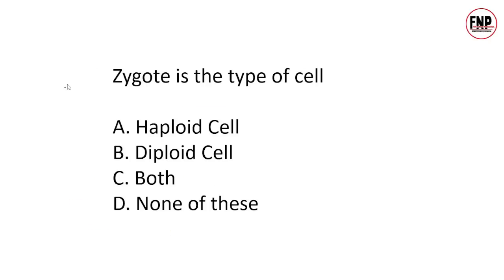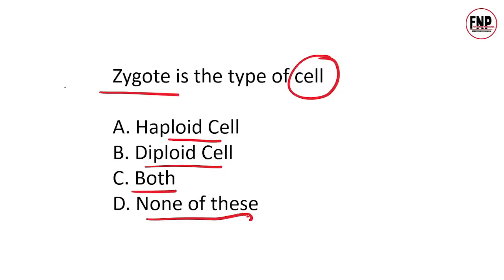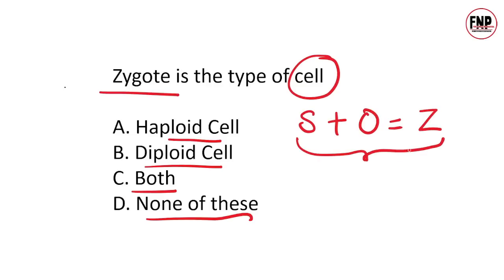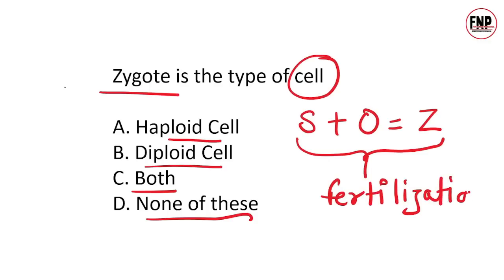Question 14: Zygote is a type of cell — Haploid, Diploid, Both, or None of these? Sexual intercourse के बाद जब sperm और ovum आपस में unite होते हैं, तब zygote का निर्माण होता है — इस process को fertilization कहते हैं। Correct answer is Option B: Zygote एक Diploid cell है, जिसमें chromosomes की संख्या 2N यानि 46 होती है।